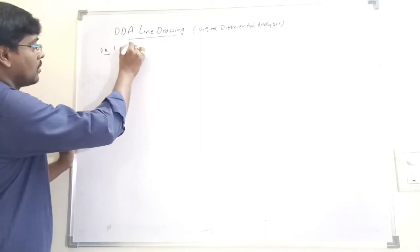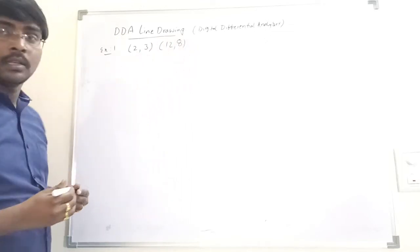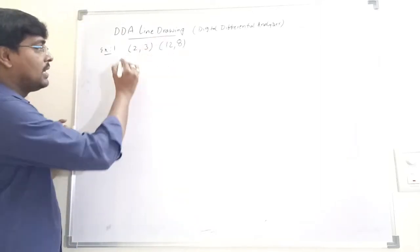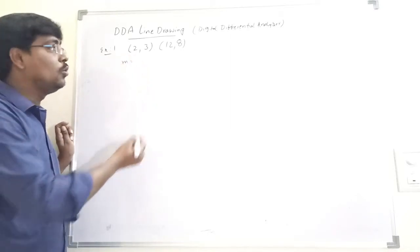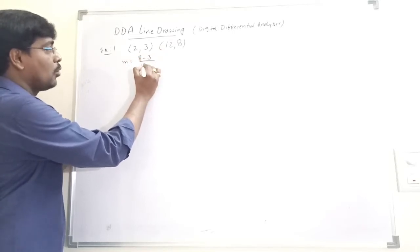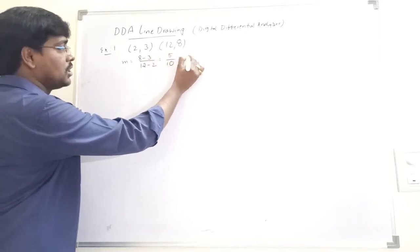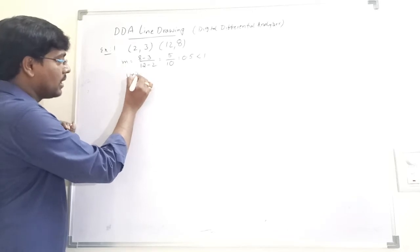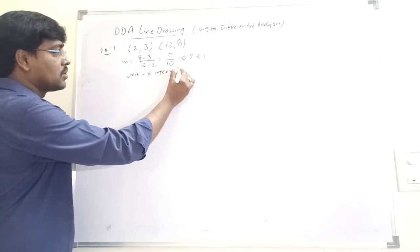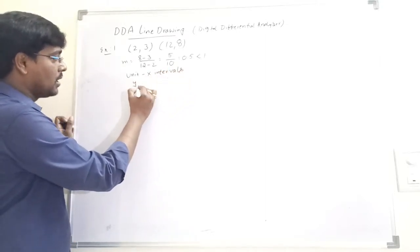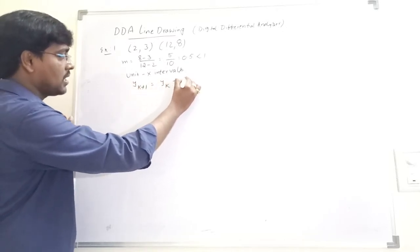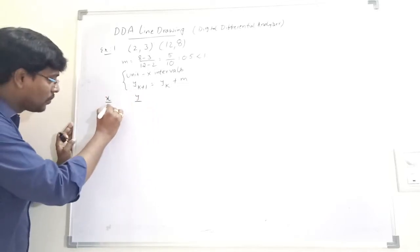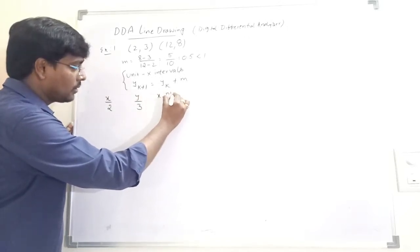Example 1 — slope less than 1. Consider the points (2, 3) and (12, 8). Here x1=2, y1=3, x2=12, y2=8. First, calculate the slope. The slope value is less than 1, so we use unit x intervals. The x value increments by 1 each step, and the y value becomes yk + m. The table has columns x, y, x-plot, y-plot.